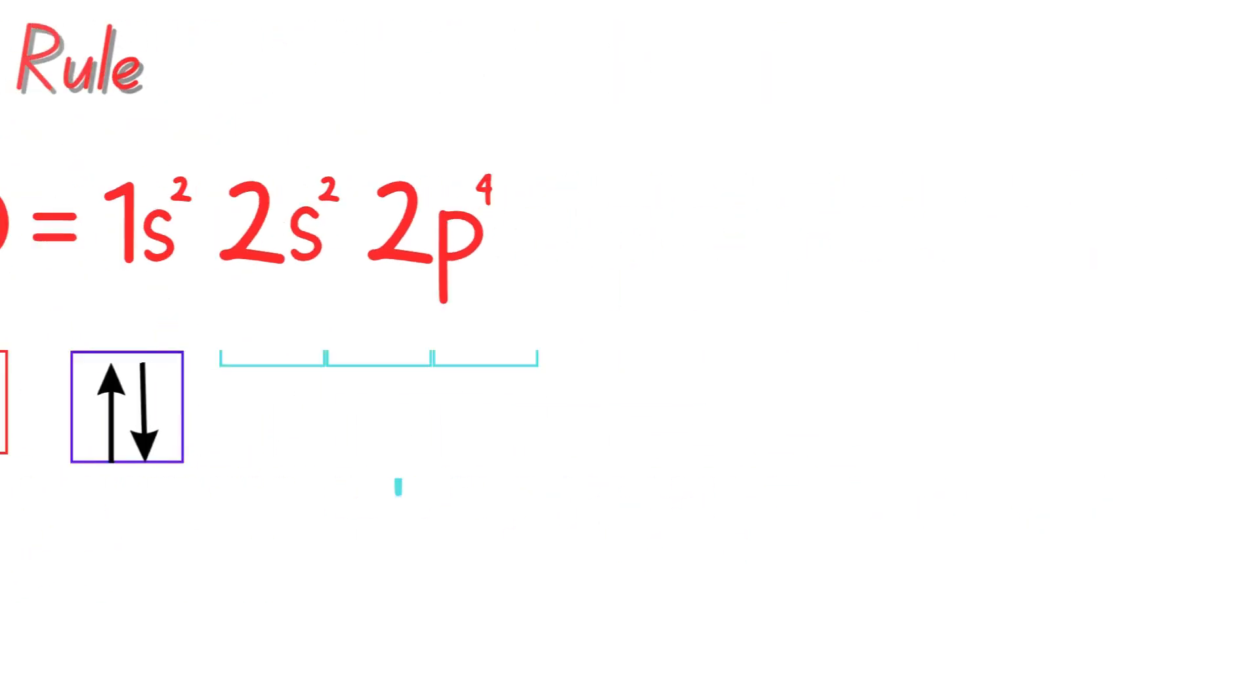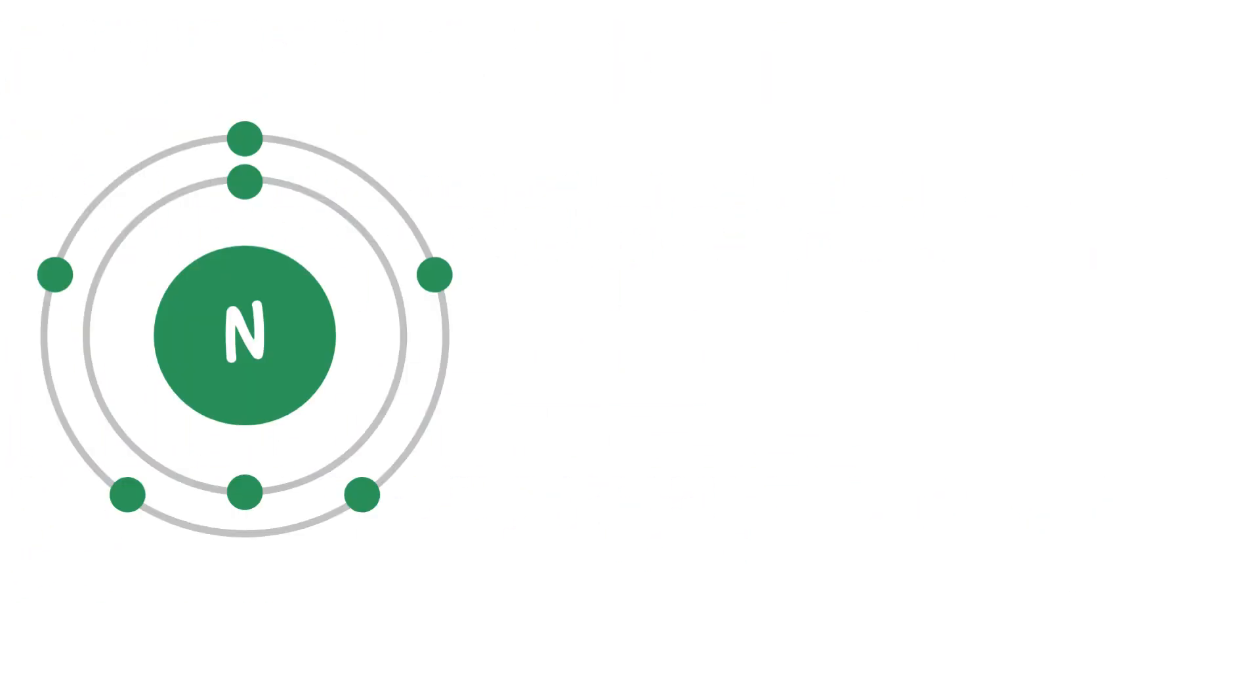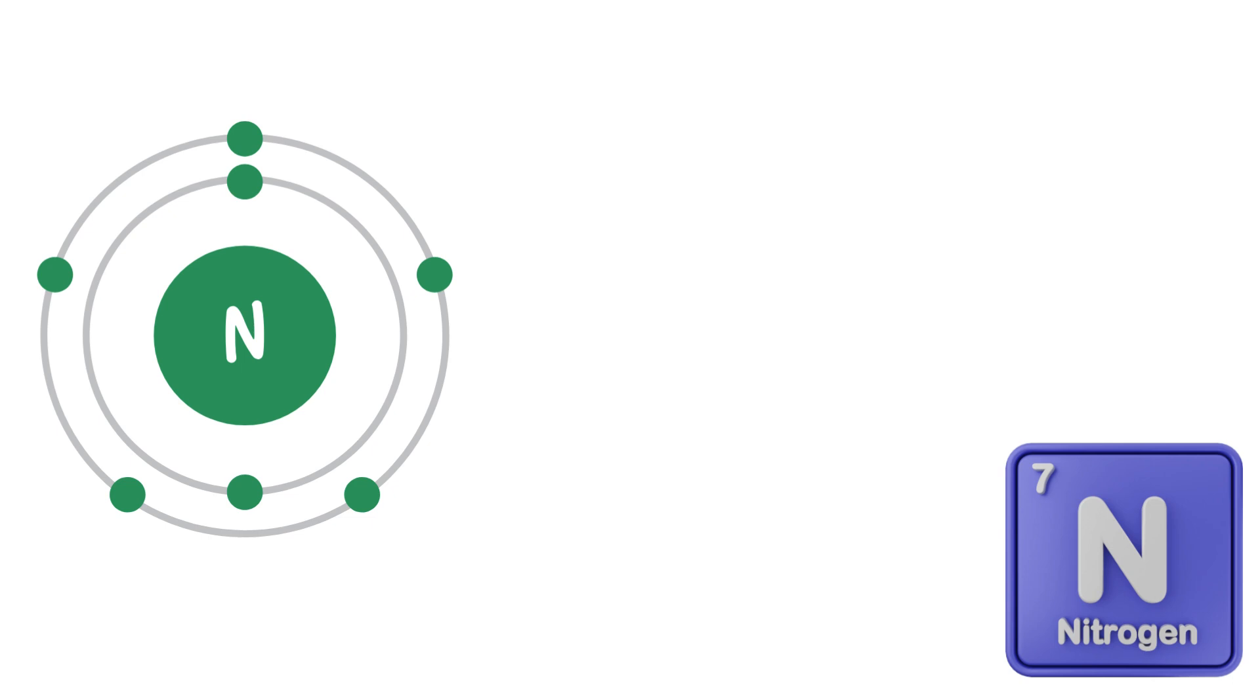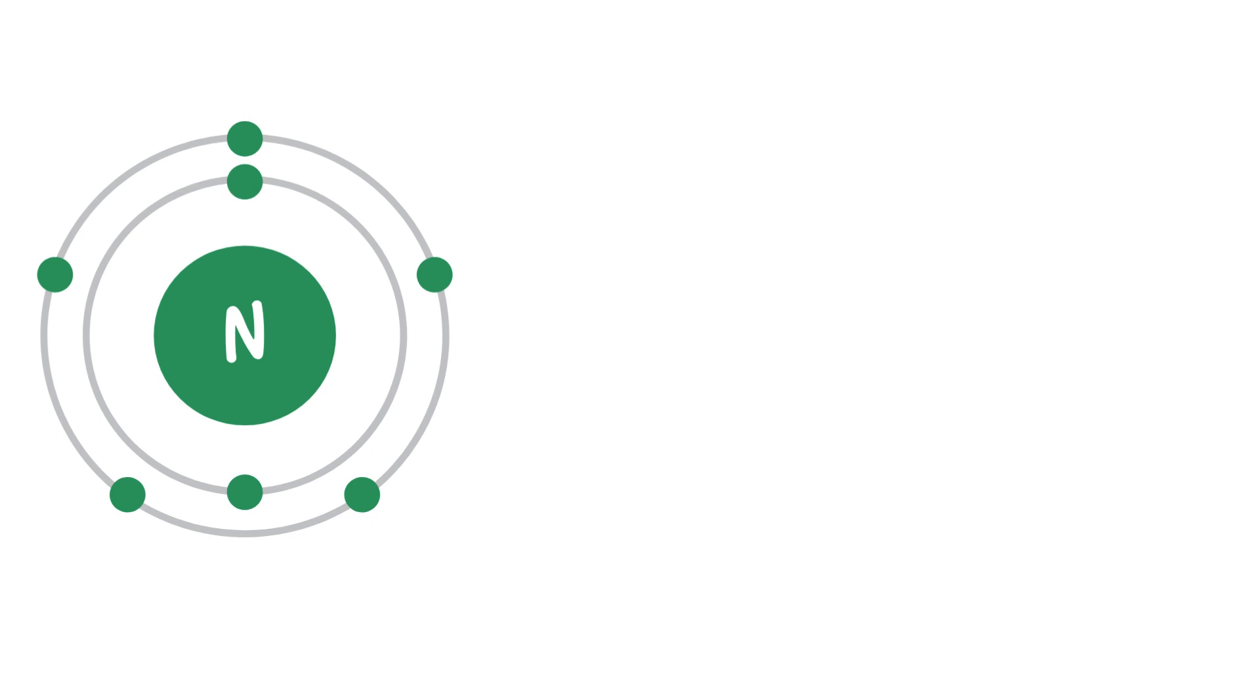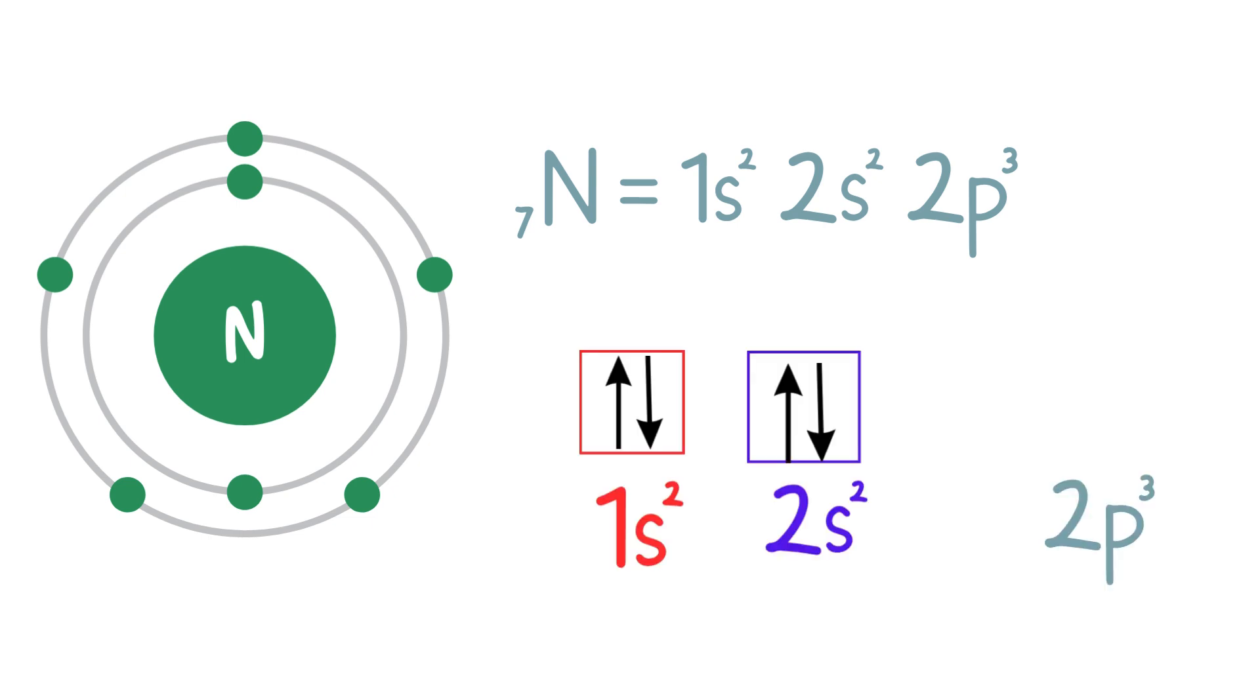Let's look at an example. Nitrogen, for example. The atomic number of nitrogen is seven, meaning it has seven electrons. The electronic configuration is 1s2, 2s2 and 2p3. Now let's focus on the 2p3 part.